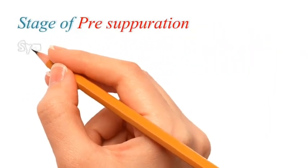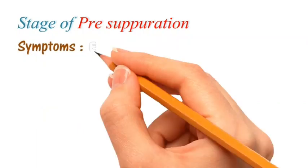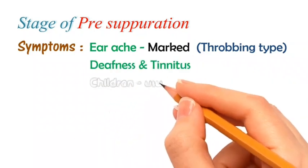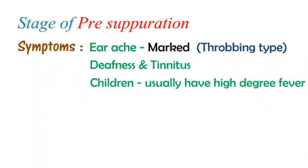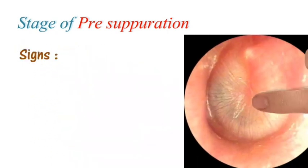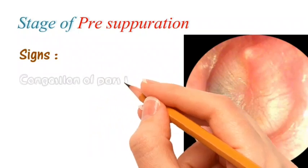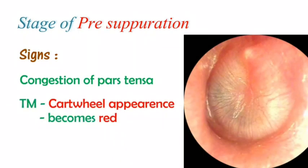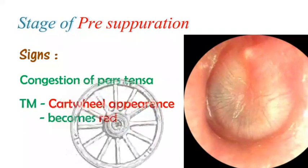If the patient proceeds to the pre-suppurative stage, the earache becomes more marked and deafness with tinnitus may be observed. In children, high-degree fever may be seen. The pars tensa will be congested and the tympanic membrane appears red with a cartwheel-like appearance.